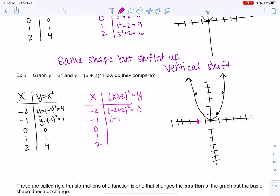Negative 1 plus 2 squared is 1 squared or 1. So negative 1 and 1. 0 plus 2 squared is what? 4? So 1, 2, 3, 4, so it's up here.